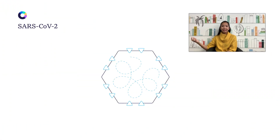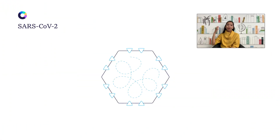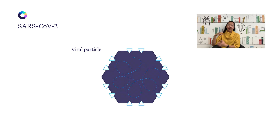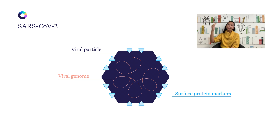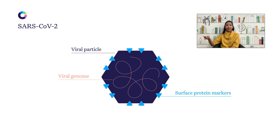Let's talk about SARS-CoV-2 vaccine development. All viruses have a very similar structure — they have a viral particle. Inside the viral particle is RNA or DNA, which is the genome of the virus, and on the surface are proteins responsible for the viral particle to be able to infect a host cell.